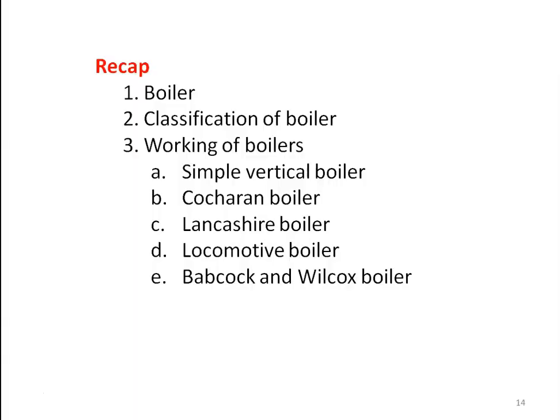We recap from the previous lecture. In the previous lecture, we defined what is a boiler, we classified the boiler, and we discussed the working of different boilers like simple vertical boiler, co-current boiler, Lancashire boiler, locomotive boiler and Babcock-Wilcox boiler. The first four — simple vertical boiler, co-current boiler, Lancashire boiler and locomotive boiler — are fire tube boilers, and Babcock-Wilcox boiler is a water tube boiler. We continue with the construction and working of the boiler and compare the fire tube and water tube boiler towards the end of the lecture.